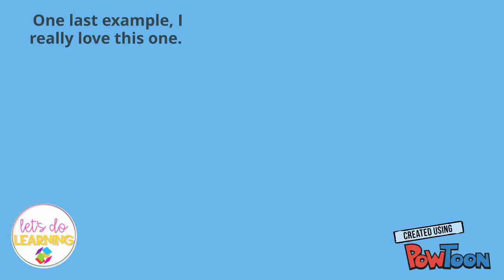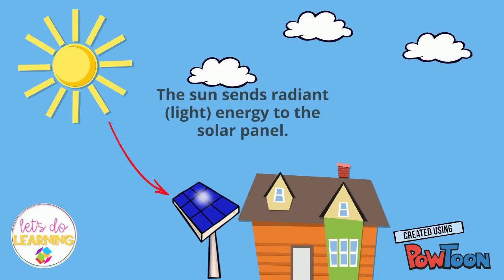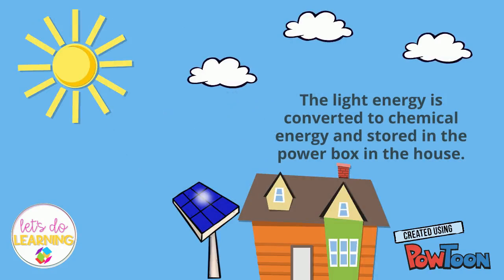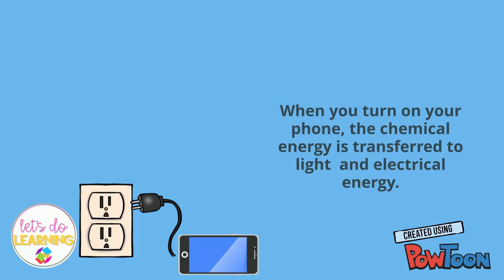Last example — I really love this one. The sun sends radiant or light energy to the solar panel. The light energy is converted to chemical energy and stored in the power box in the house. Then you plug your cell phone into the outlet, transferring the electrical energy to chemical energy to store in the phone's battery. When you turn on your phone, the chemical energy is transferred to light and electrical energy.